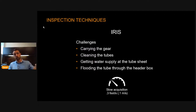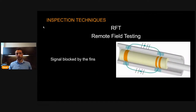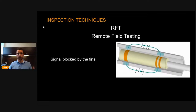What other techniques could be used? Remote field testing for carbon steel would be really good, but there's a major deal breaker — the fins on the outside block remote field testing. So we need to look at other opportunities.